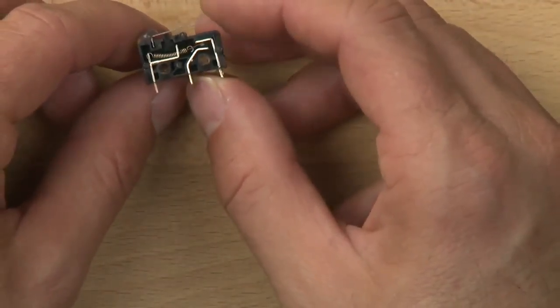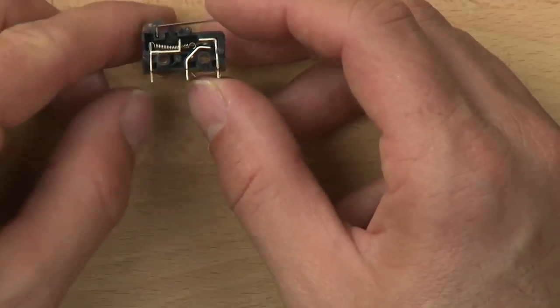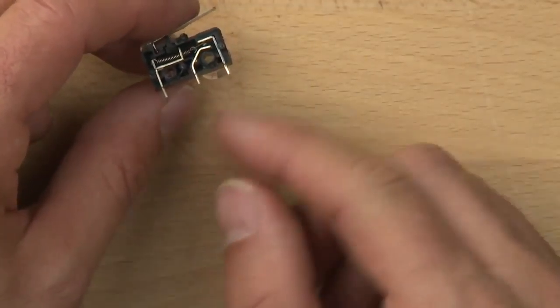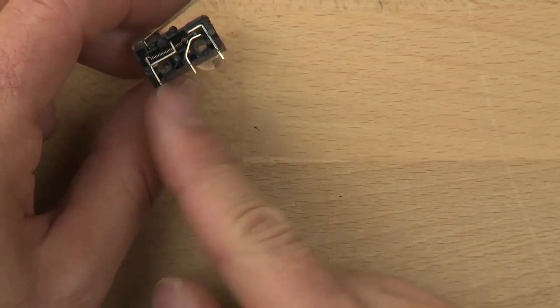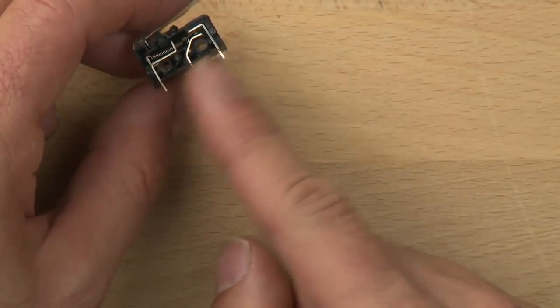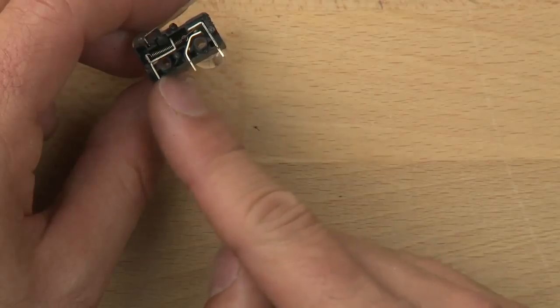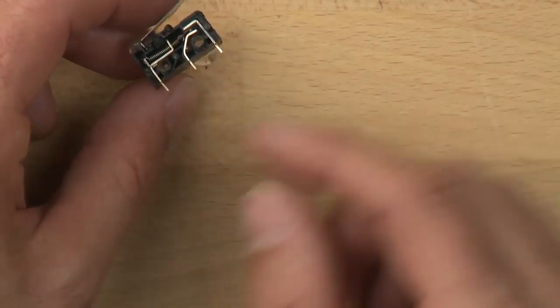So again, when we push on the lever switch, it switches between this contact. This contact is always connected, but it switches between these two contacts. So there's single pole, this is the pole, and there's two throws. So you can see these two throws are there. And when the switch gets bumped, it switches between those throws.